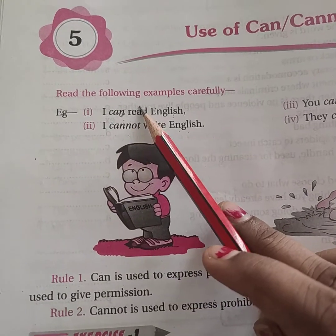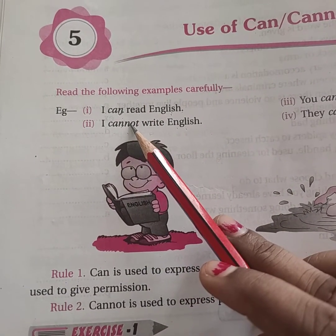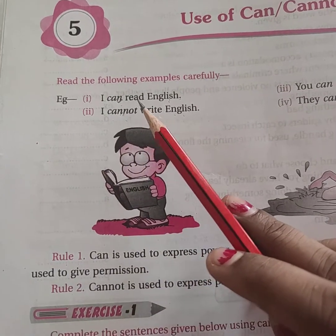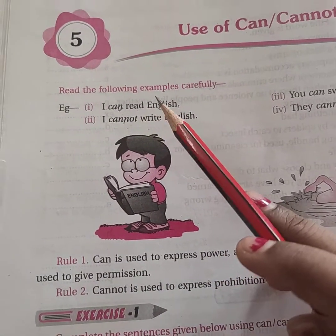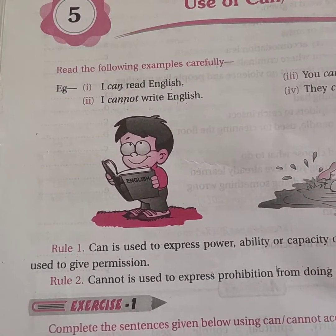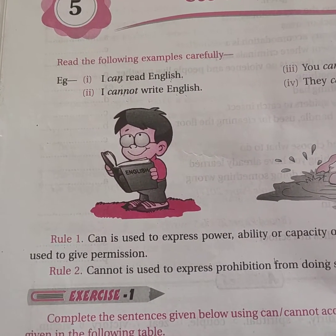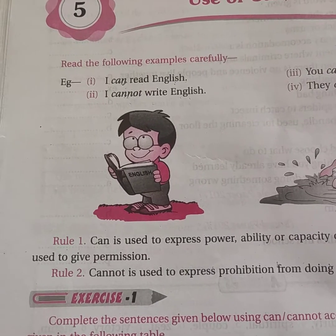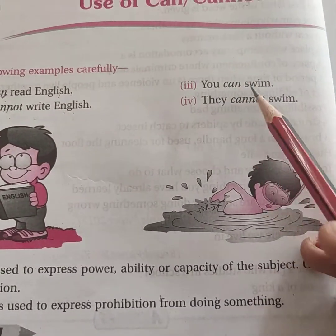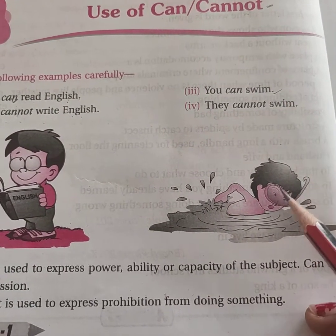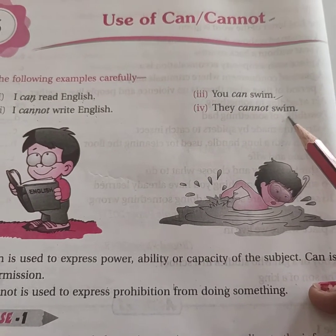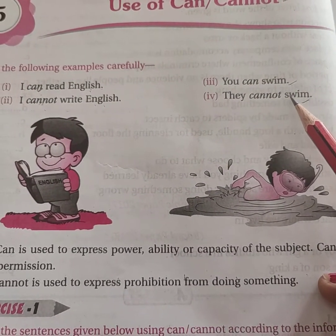Can का मतलब सकना — ability. और cannot means disability — अयोग्यता, किसी काम को न करने की क्षमता. For example: You can swim — तुम तैर सकते हो. They cannot swim — वे नहीं तैर सकते. Are you getting something?